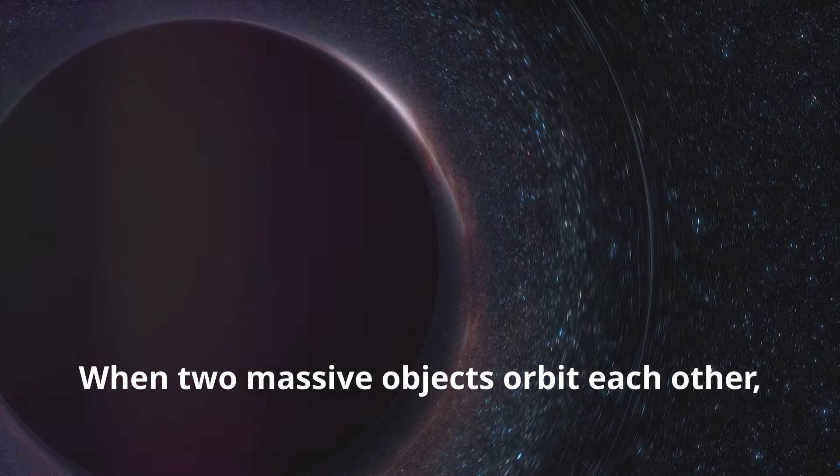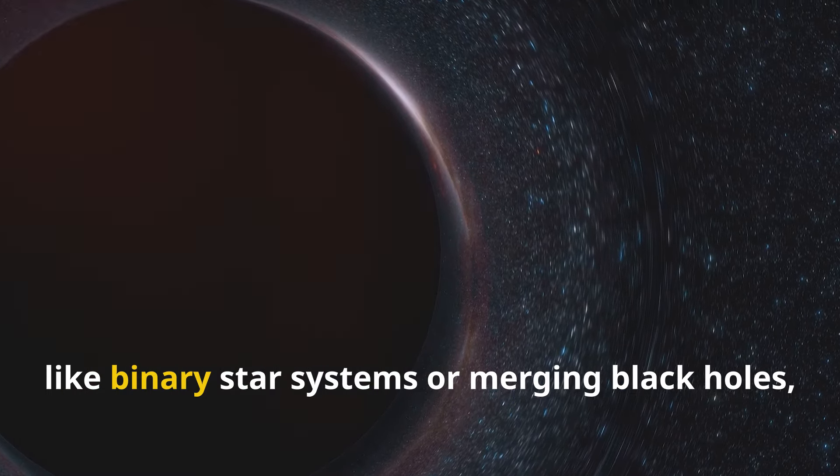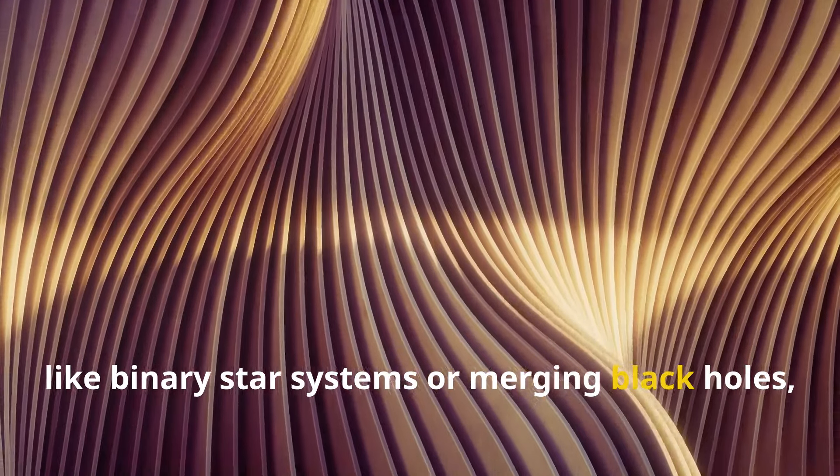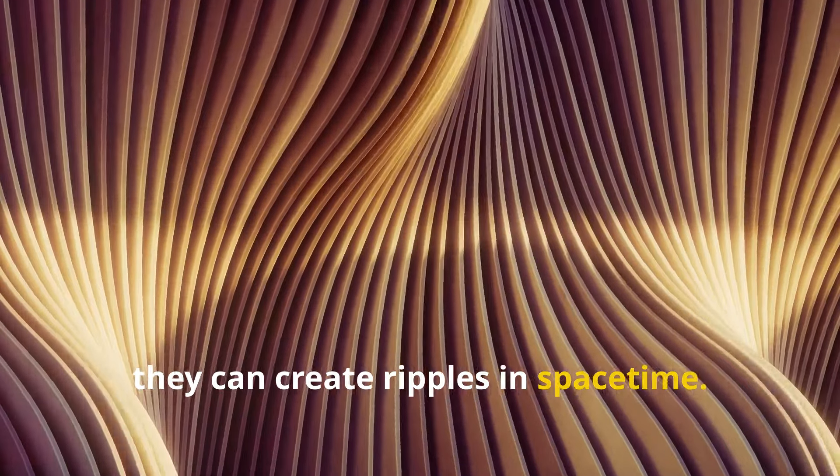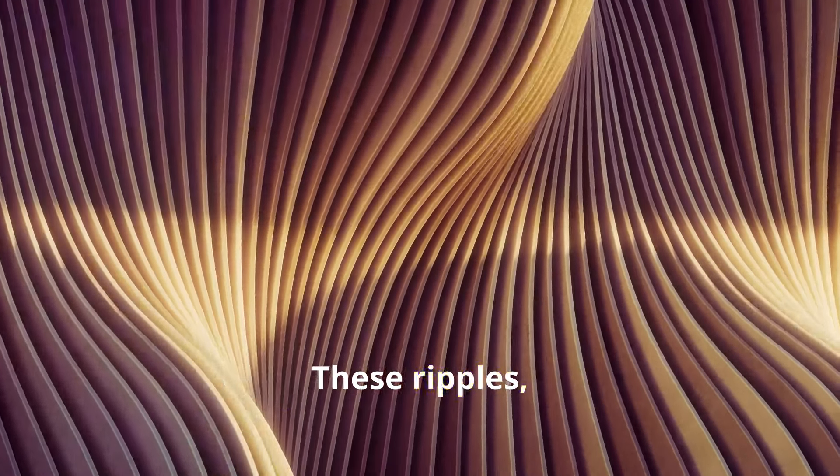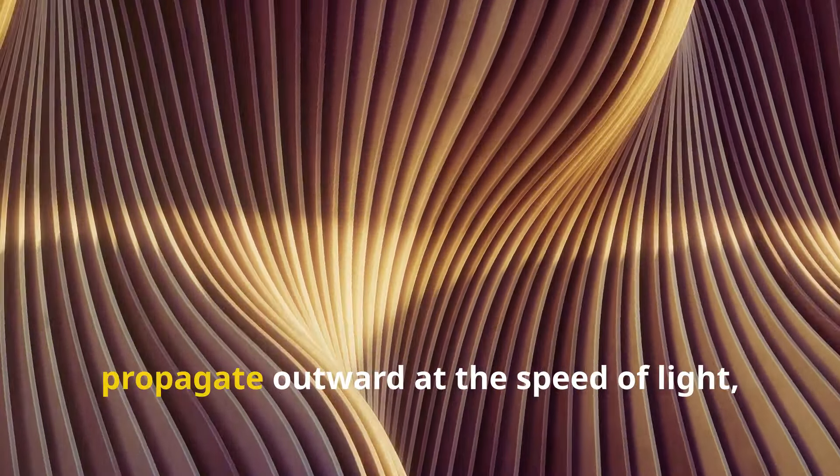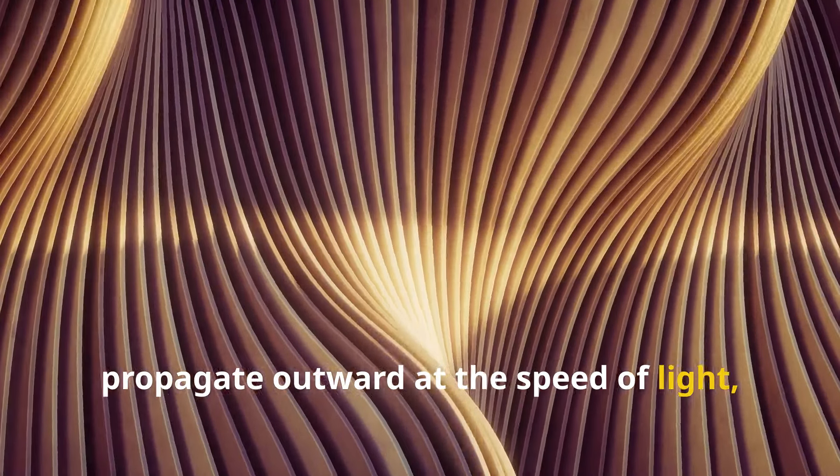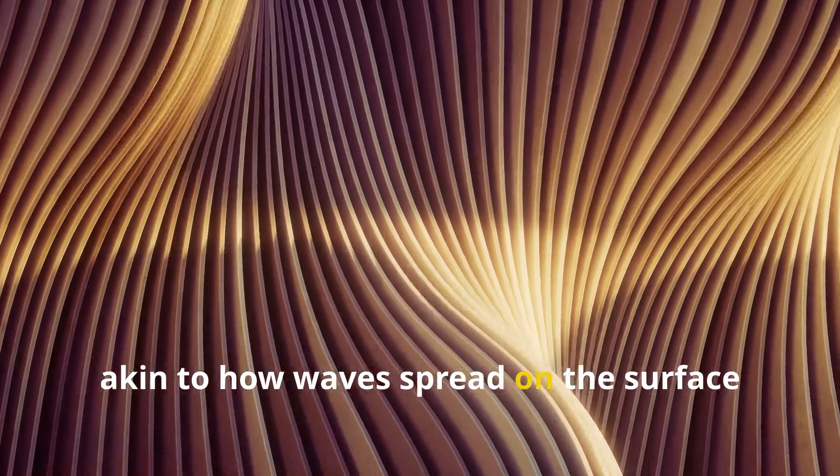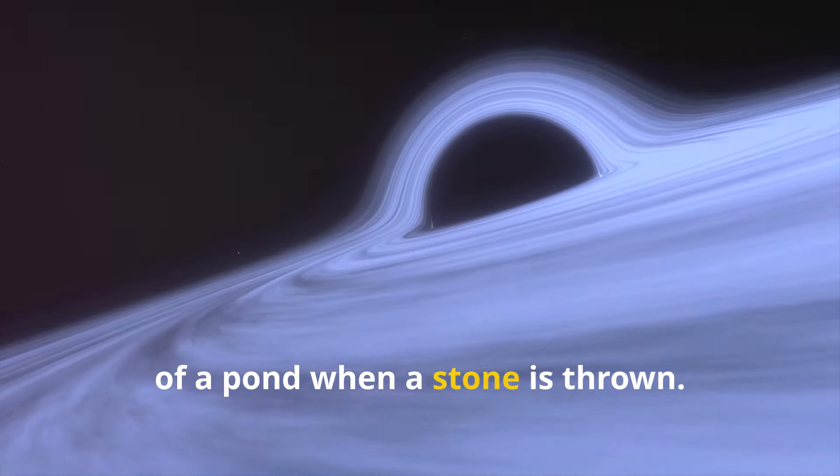When two massive objects orbit each other, like binary star systems or merging black holes, they can create ripples in space-time. These ripples, or gravitational waves, propagate outward at the speed of light, akin to how waves spread on the surface of a pond when a stone is thrown.